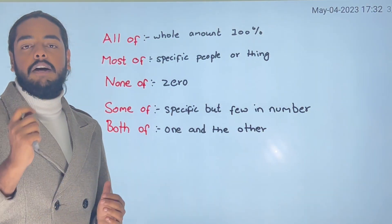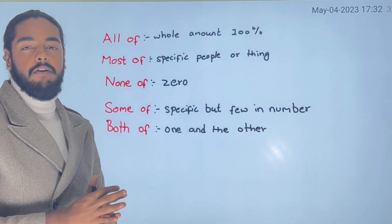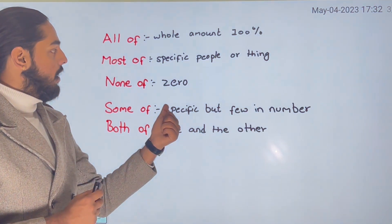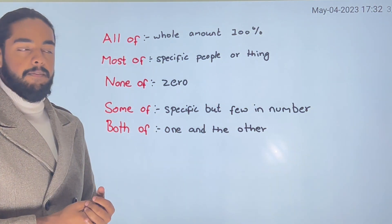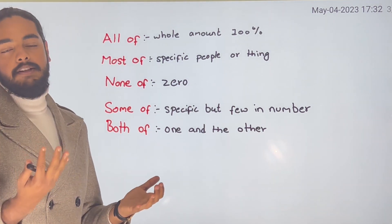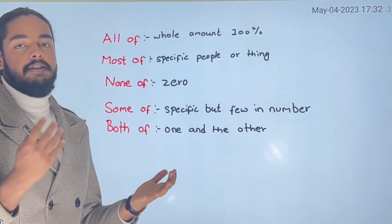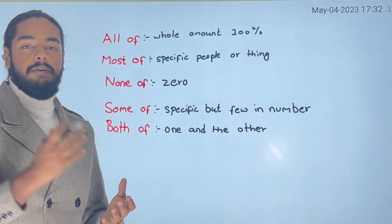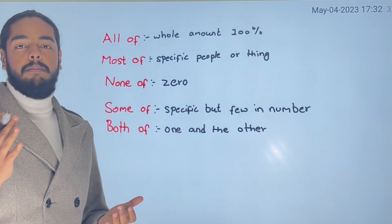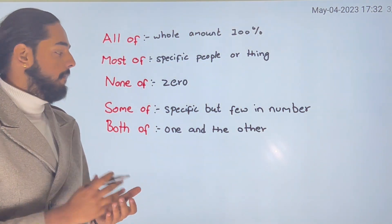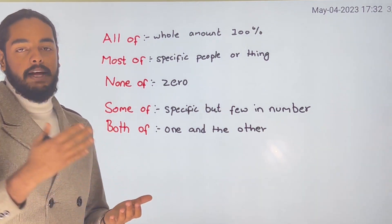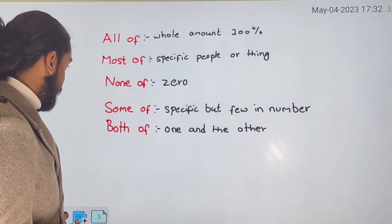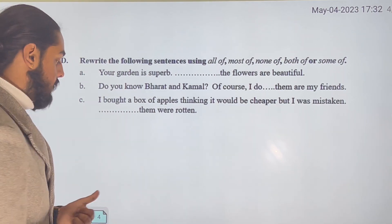So: all of means the whole amount — it's 100%. Most of refers to specific people or things — the majority. None of means zero — none at all. Some of means specific but few in number. And both of means one and the other — referring to two things.